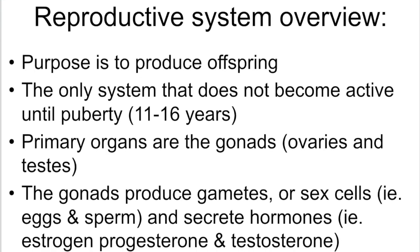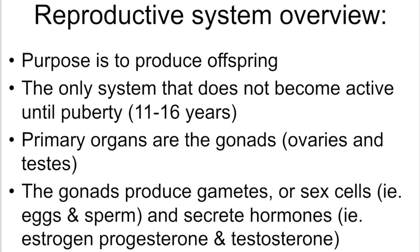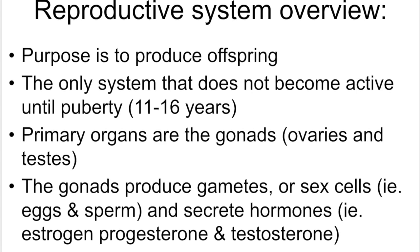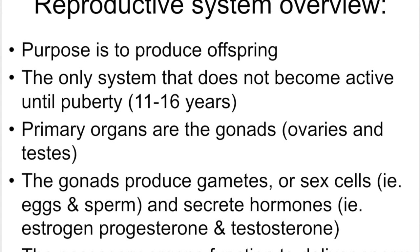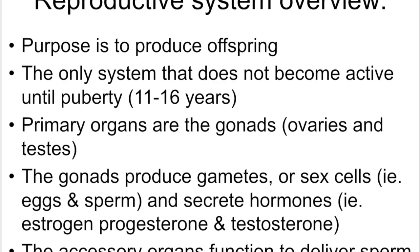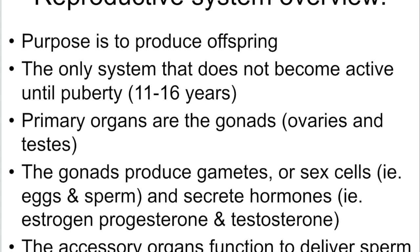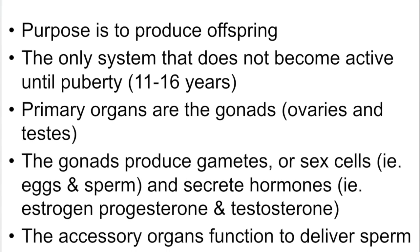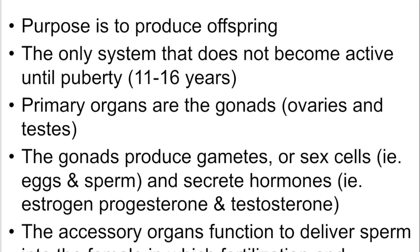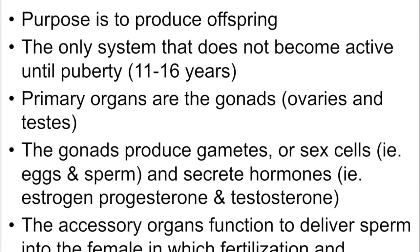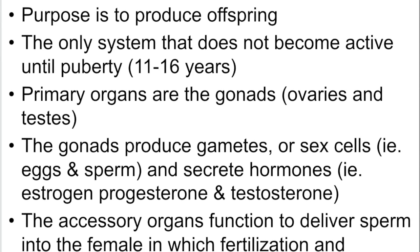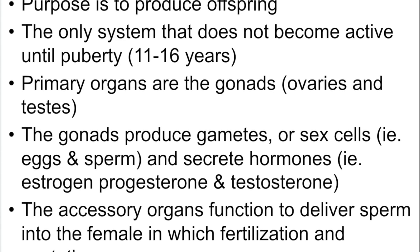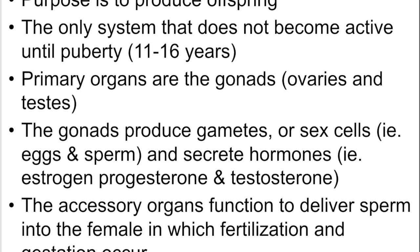The purpose is to reproduce offspring. It is the only system that does not become active until puberty, somewhere around 11 to 16 years old. The primary organs are the gonads — the ovaries and testes, female and male respectively. The gonads are responsible for producing gametes or sex cells; in males that would be sperm and in females eggs, and they're also responsible for secreting hormones such as estrogen, progesterone, and testosterone.